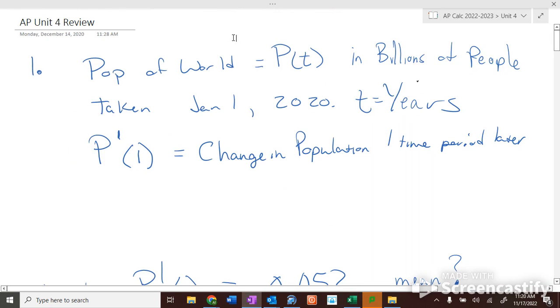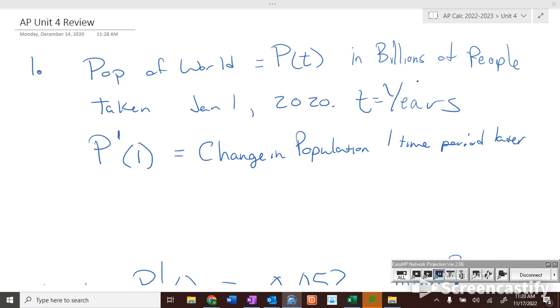Alright, here we go. 15 questions on Monday's test. If the population of the world equals P(t) in billions of people, and the population was taken on January 1st of 2020, where T is the number of years, what does P'(1) mean?